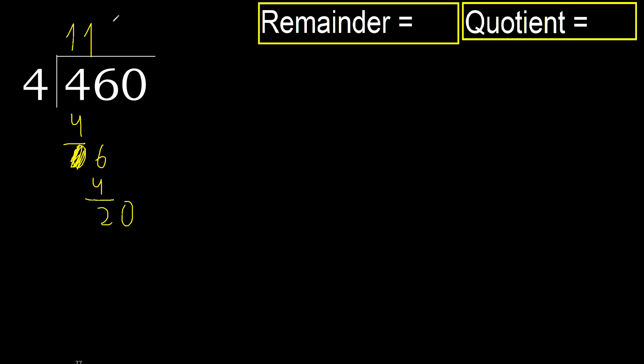20. 4 multiplied by 5 is 20 — is not greater, ok. Subtract 0. Next.